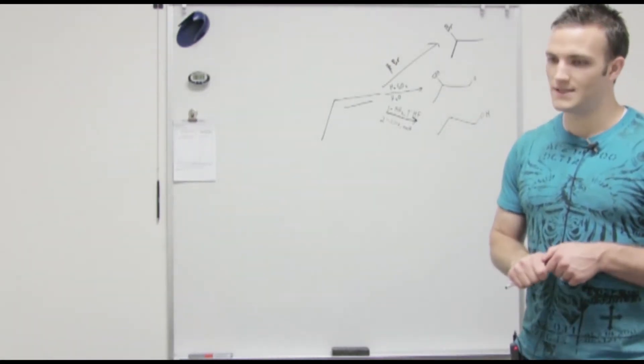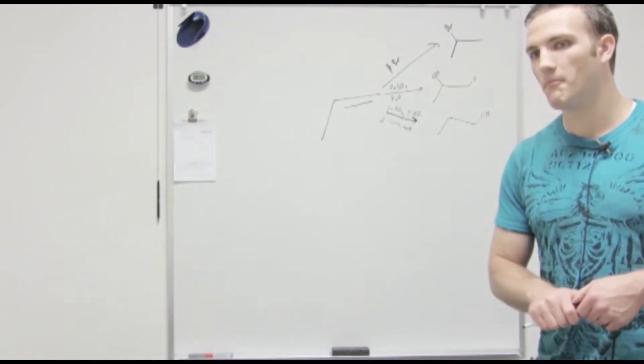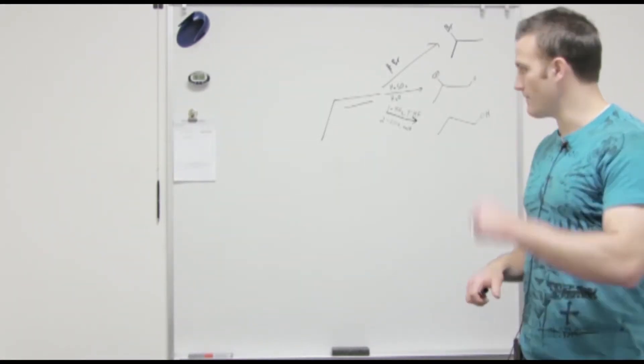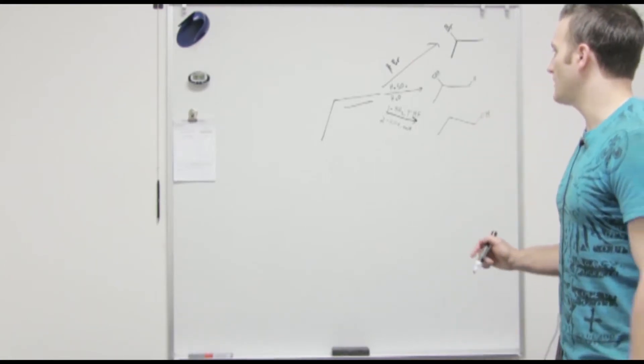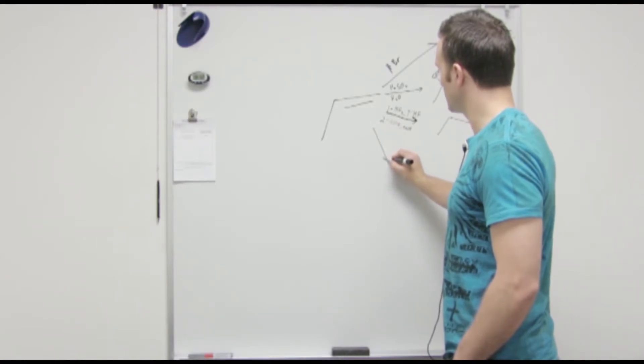What other mechanisms did you guys see? Halogenation of an alkene. Yep. You can make a vicinal dihalide. Okay, how do you do that? Yeah, and you add a diatomic, Br2 or Cl2.